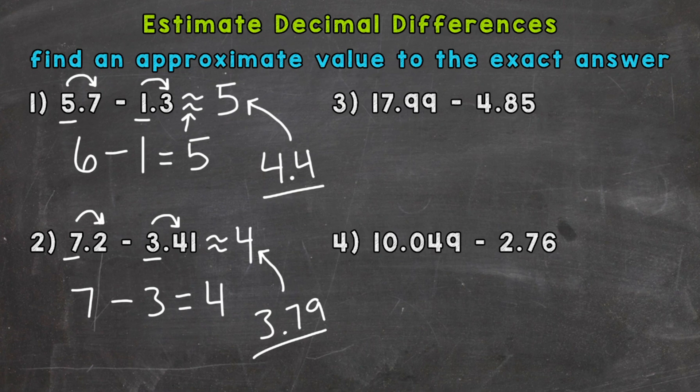On to number three, 17.99 minus 4.85. We'll take a look at the nearest whole number. 17.99 rounds to 18. It's actually very close to 18, minus 4.85 rounds to 5. So 18 minus 5 gives us an estimate of 13.